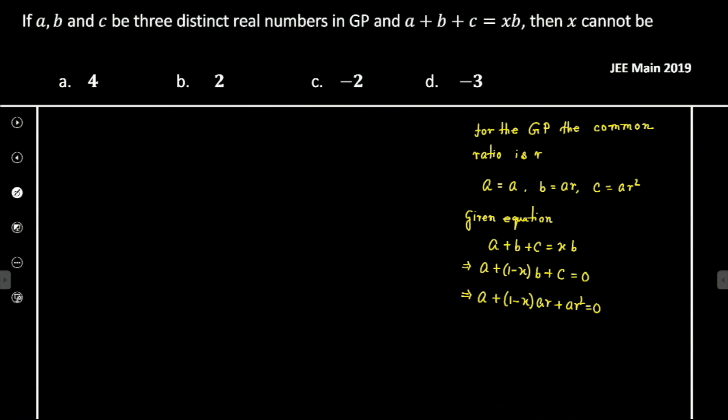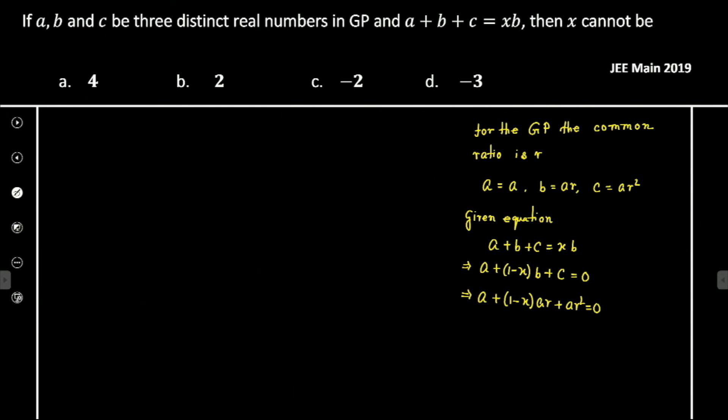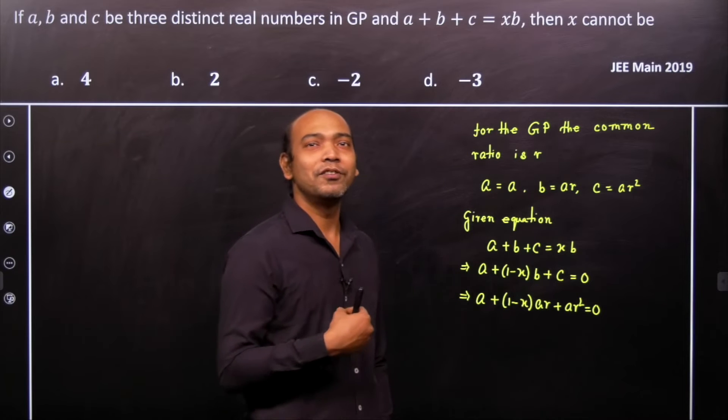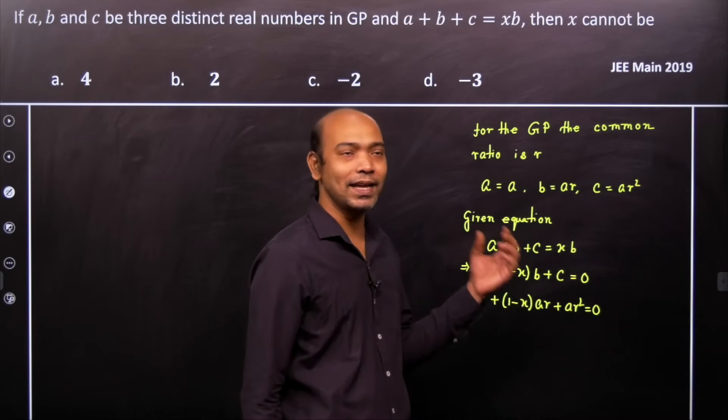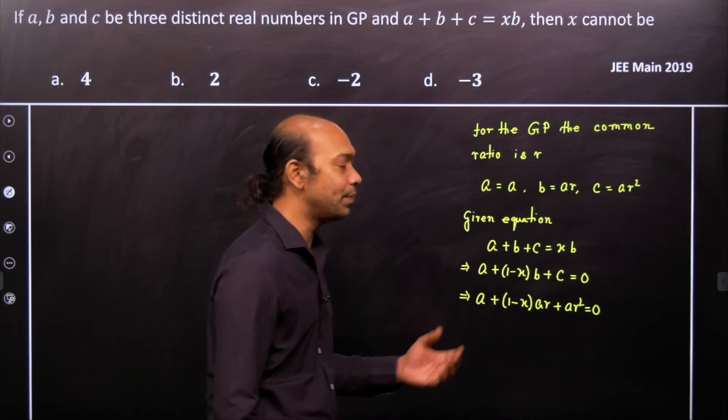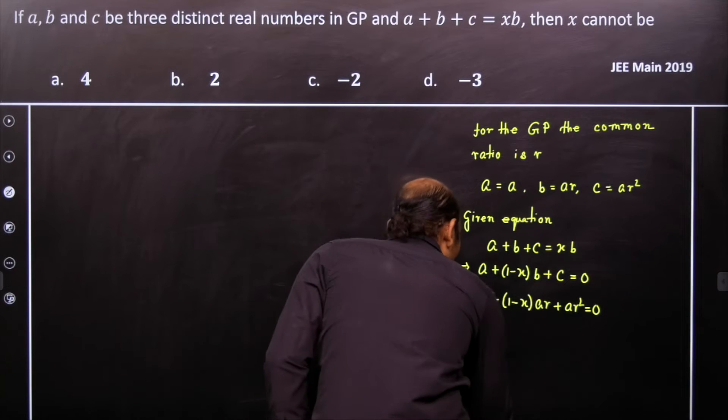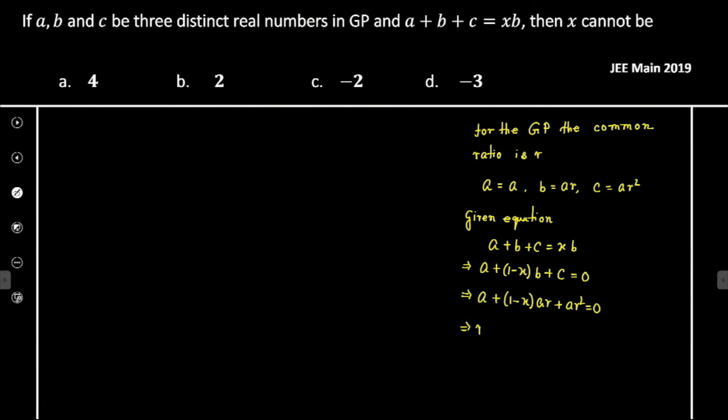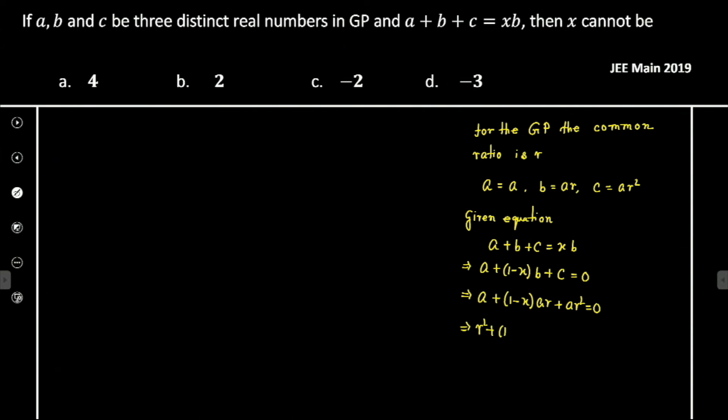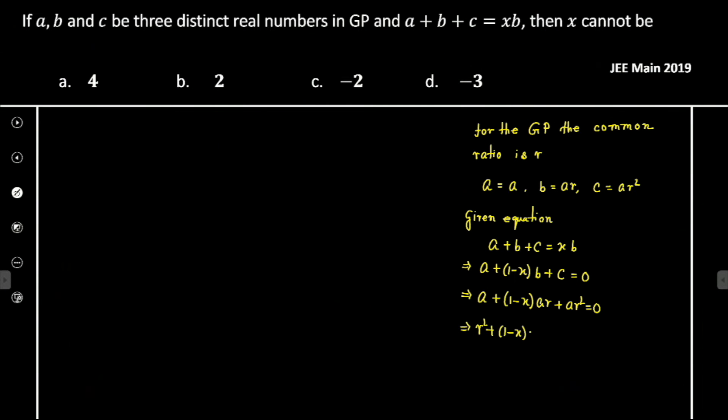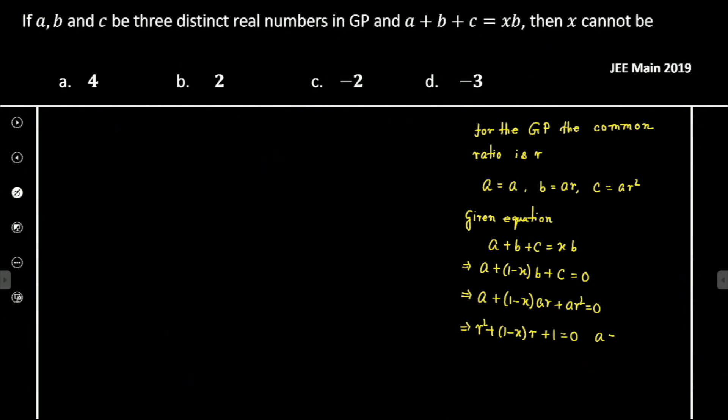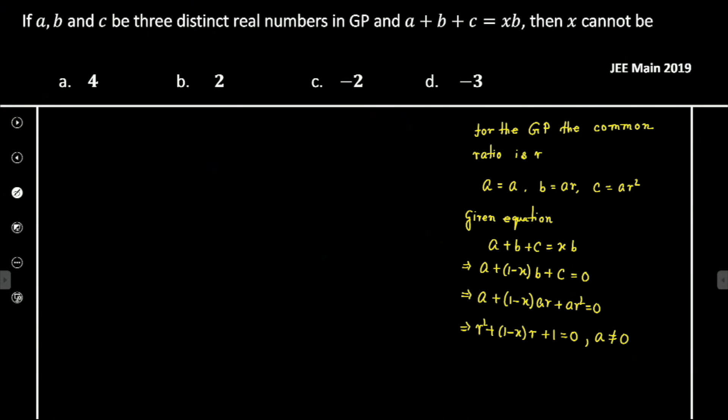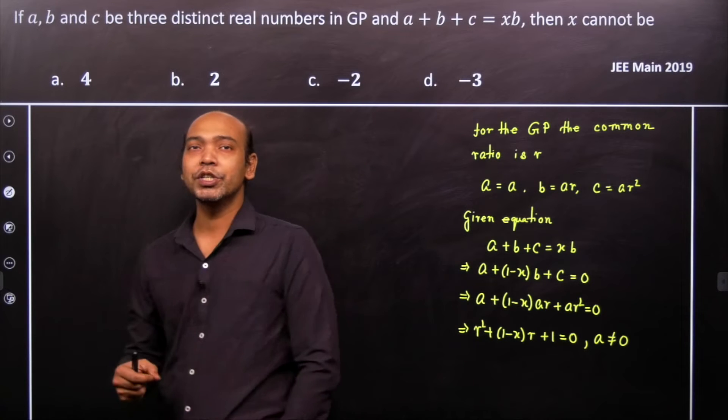Now it's given that a, b, c are distinct. So obviously, for trivial cases, we cannot consider a = 0. If a = 0, then a, b, c all are 0. Therefore, we'll assume a ≠ 0, and hence the equation reduces to r² + (1 - x)r + 1 = 0.